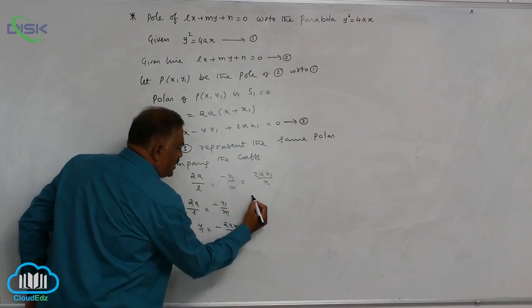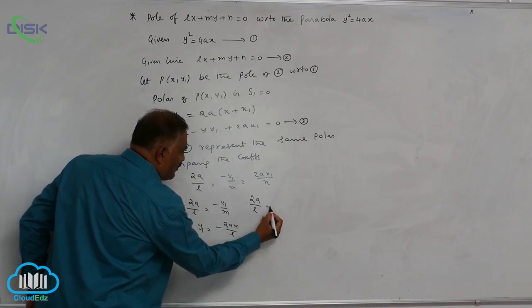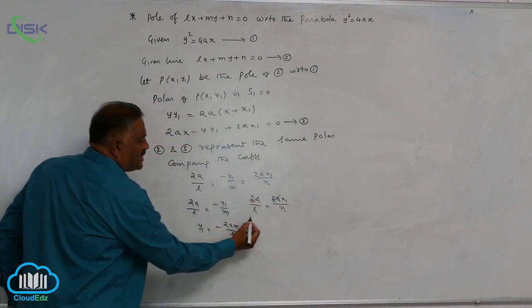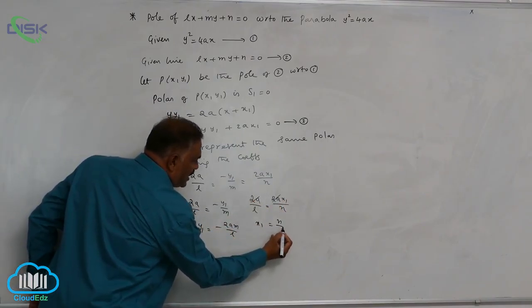Take first and last: 2A by L is equal to 2Ax1 by N. 2A gets cancelled, x1 is equal to N by L.